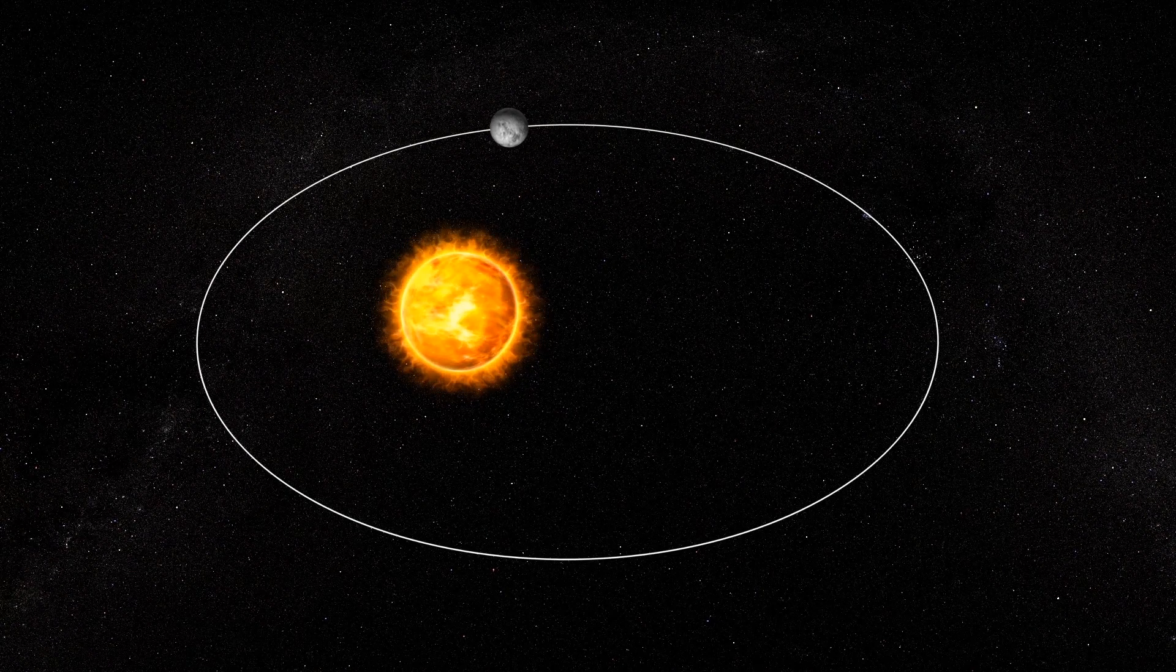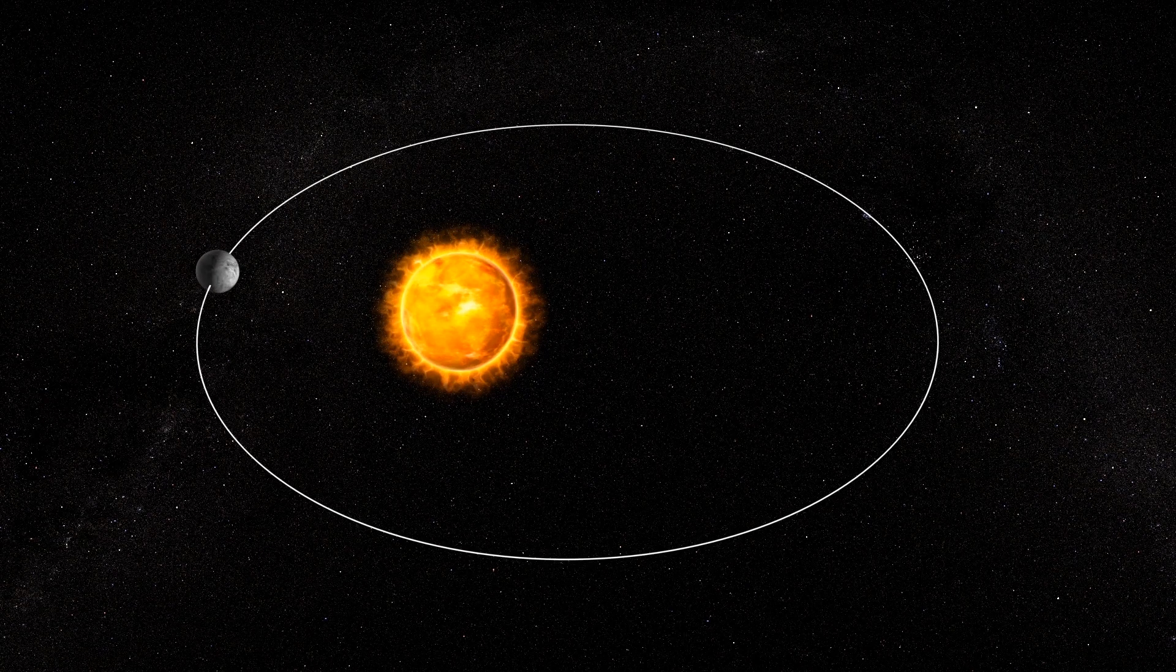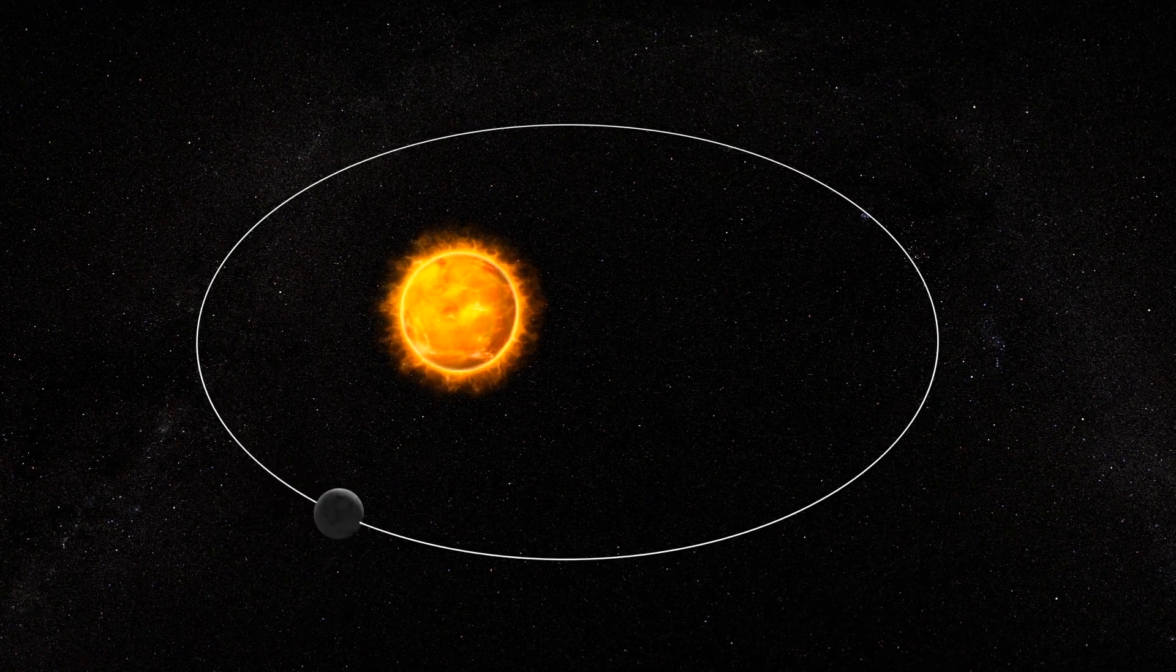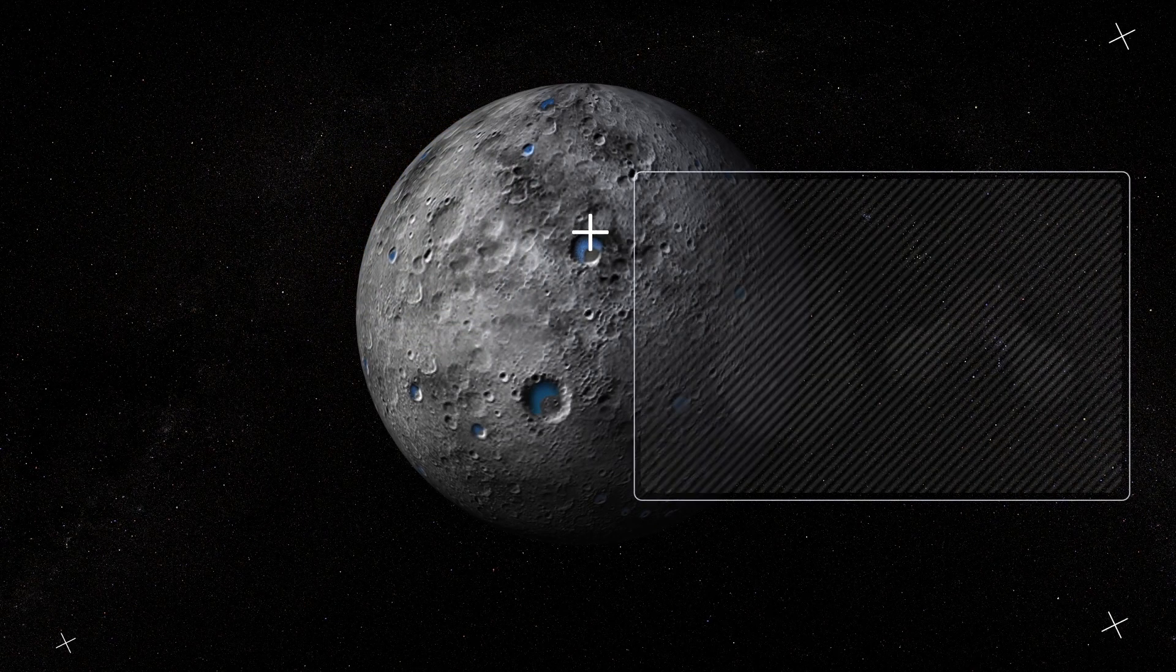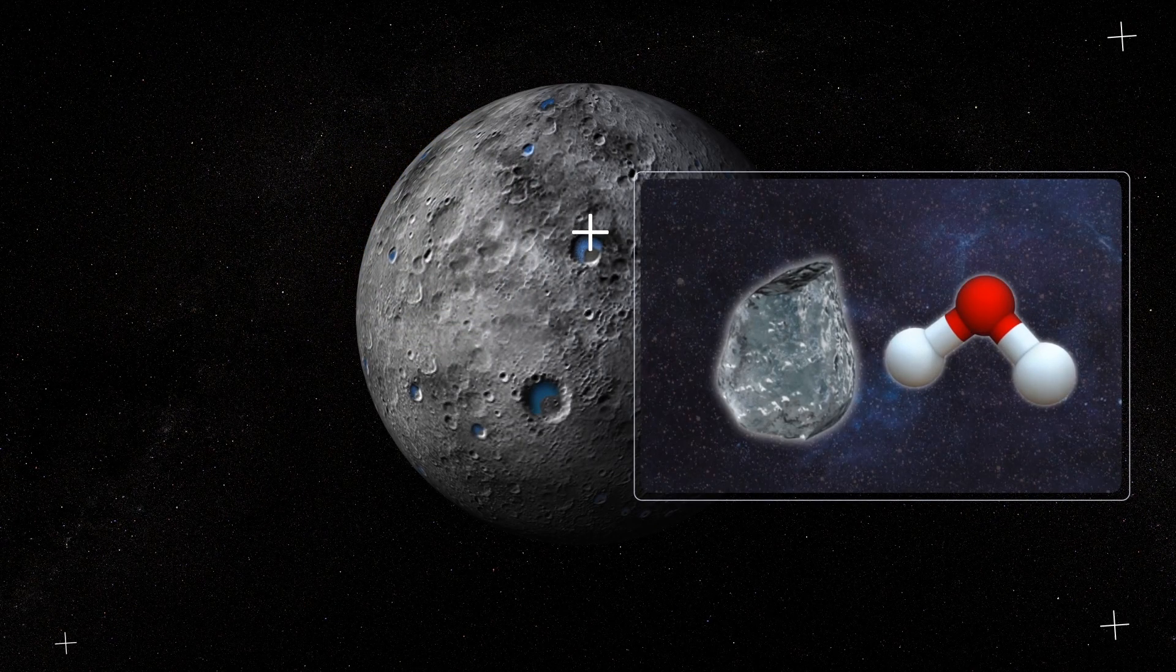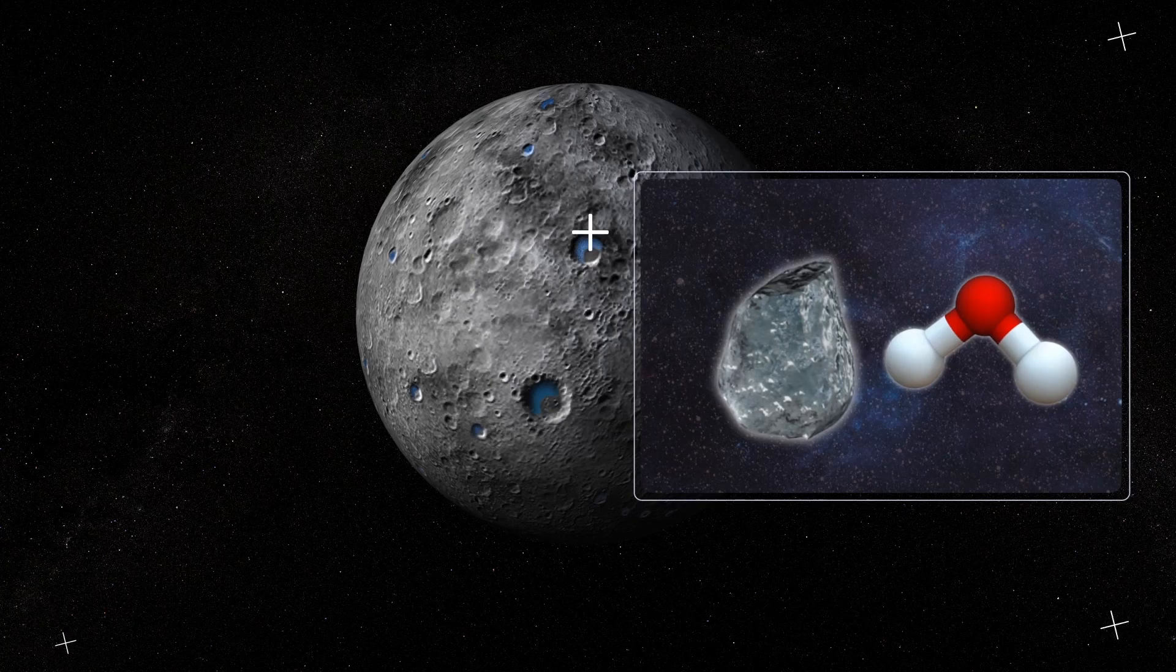Mercury's close orbit around the Sun and extreme heat may have helped the planet to generate ice. Writing in the Astrophysical Journal Letters, scientists say solar wind may contribute to a chemical process that forms ice in Mercury's poles.